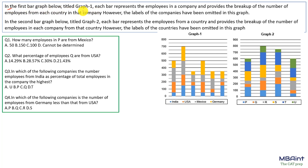In the first bar graph given below — that is Graph 1 — each bar represents employees in a company and provides the breakup of the number of employees in each country in that company. However, the labels of the companies have been omitted in the graph. So if you look into Graph 1, we know that for India, in various companies, how many employees are there. Similarly for USA, the number of employees in different companies. Now we do not know the company, so if we sum this complete value, we will get a company; if we sum this value, we will get a different company.